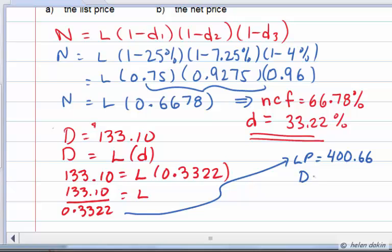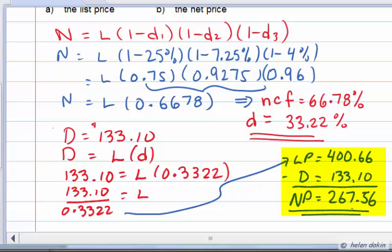Since we know the amount of discount is $133.10, we can now subtract that, ending up with a net price of $267.56. So the list price is $400.66 and the net price is $267.56.